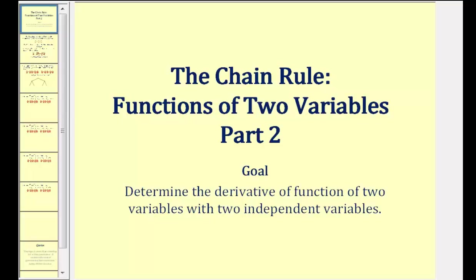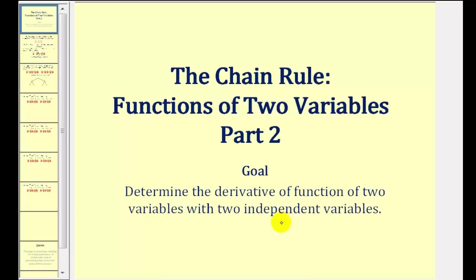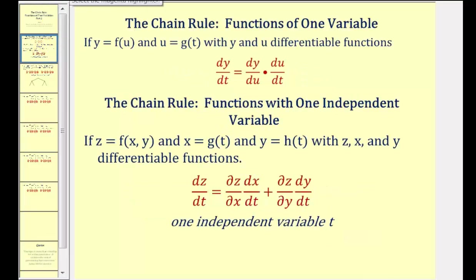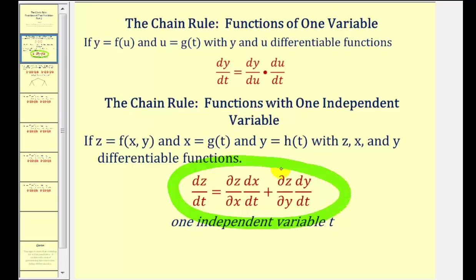Welcome to a second video on the chain rule for functions of two variables. In this video we'll determine the partial derivatives of a function of two variables with two independent variables. In the previous video we discussed how to determine dz/dt with a function in two variables with one independent variable.